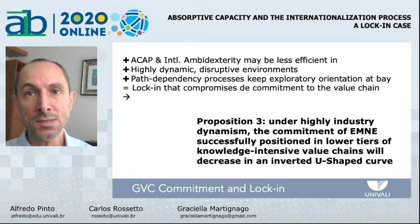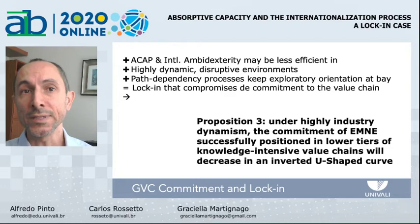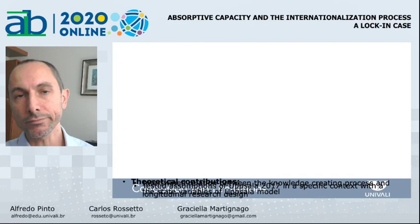As it is known that the failure of a company in developing exploratory capabilities in a highly dynamic industry compromises its survival, we posit that under high industry dynamism, the commitment of emerging market multinational enterprises successfully positioned in lower tiers of knowledge-intensive value chains will decrease in an inverted U-shaped curve. These propositions connect the evidence collected in the case with the extant literature; nevertheless, we acknowledge that different reasoning could explain the locking state of ZEN.